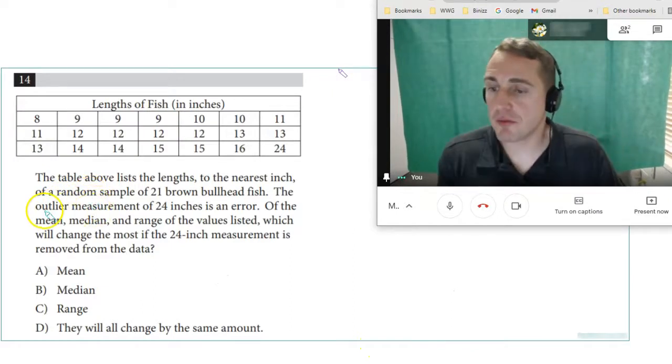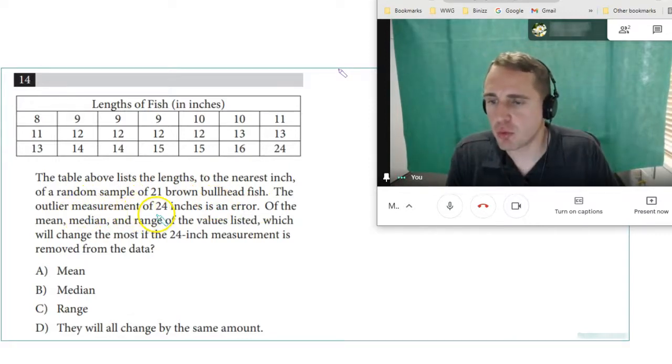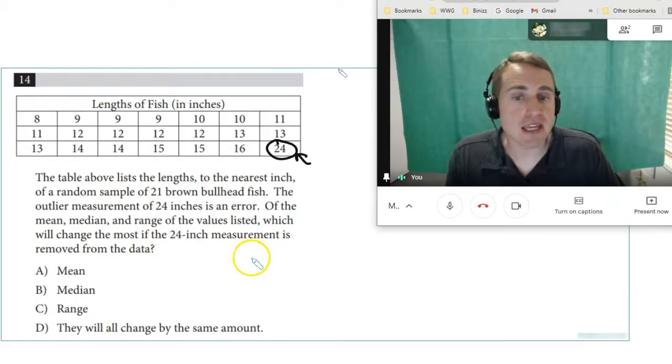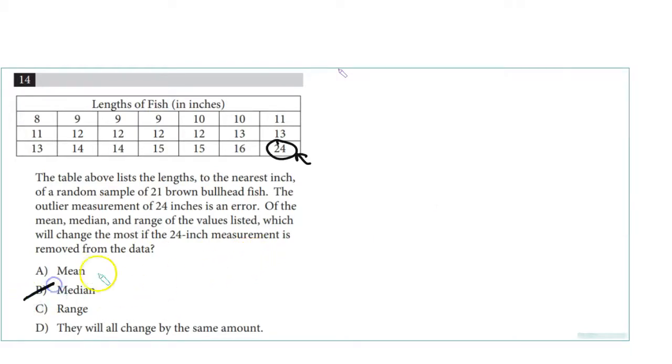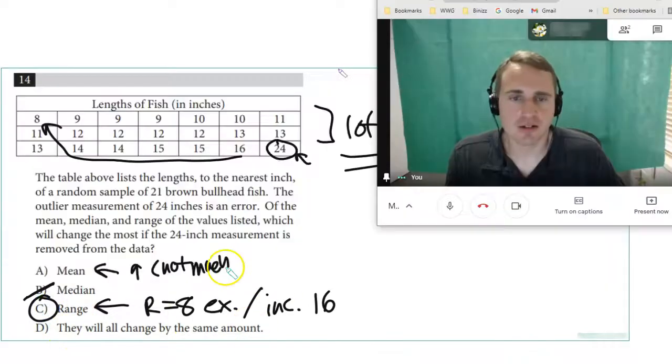Number 31: The table above lists the lengths to the nearest inch of a random sample of 21 brown bullhead fish. The outlier measurement of 24 inches is an error. Of the mean, median, and range of the values listed, which will change the most if the 24 inch measurement is removed from the data? It turns out median is not affected by outliers that much. The mean would be, and the range would be. Now the range is going to be 8 if you exclude it, but if you include it, the range is going to be 16. The mean, if you include this, is going to boost the mean up but not much because there's a lot of other values. Since there's a lot of others, the range is going to be the most affected, which is the max minus the min.